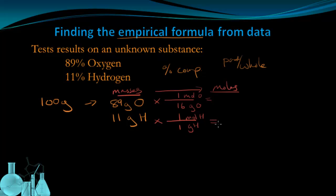If I do these calculations, I'm going to be able to find out the moles of oxygen and hydrogen in this sample. 89 times 1 divided by 16 is 5.5 moles, and 11 grams of hydrogen times 1 divided by 1 is 11 moles of hydrogen.